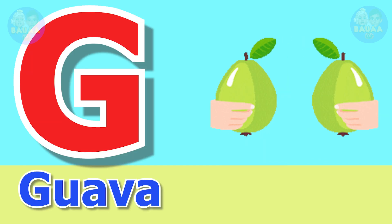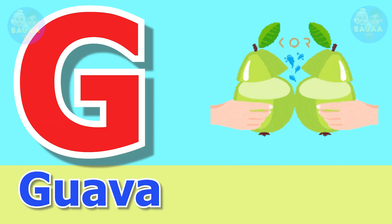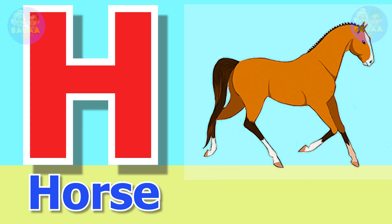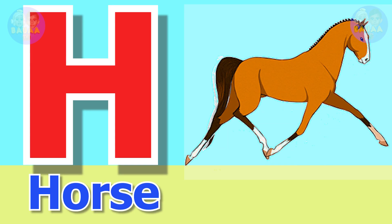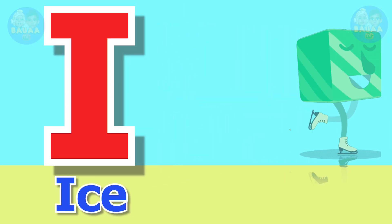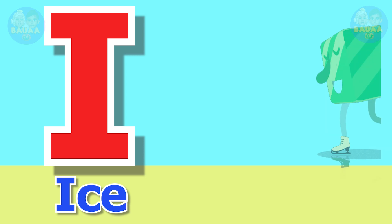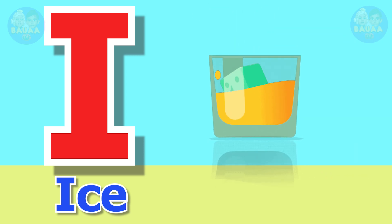G for guava, guava means amruth. H for horse, horse means ghoda. I for ice, ice means baraw.